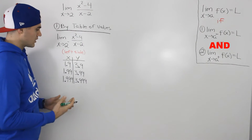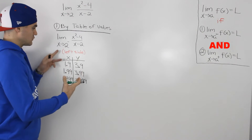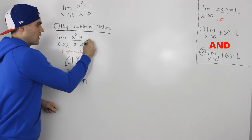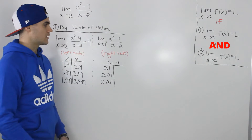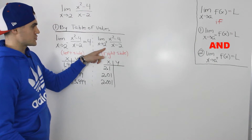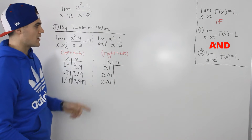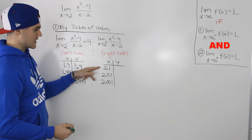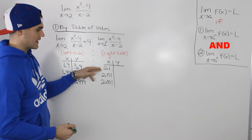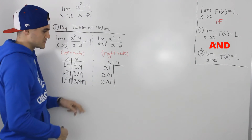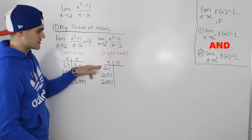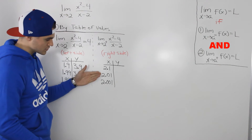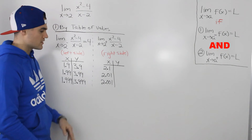So we can be pretty confident that as x approaches 2 from the left side, the function's y values are going to approach a value of 4. And then similarly, we have to find the limit as x approaches 2 from the right side. We make a table of values, but now the x values are approaching from the right side, so the x values we use are 2.1, 2.01, and 2.001, just getting closer and closer to 2 from the right side.